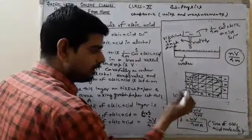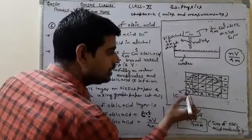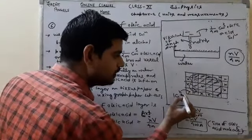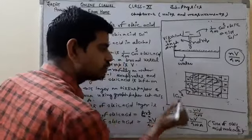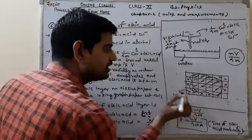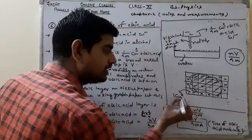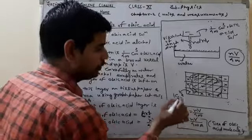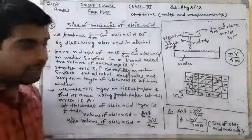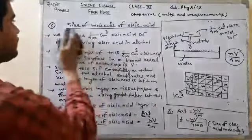Note: the area of each block is 1 centimeter square — that is 1 cm × 1 cm. I had incorrectly written 1 centimeter cube earlier.